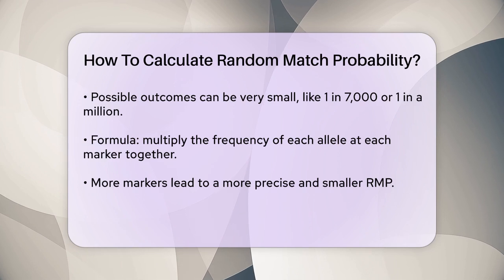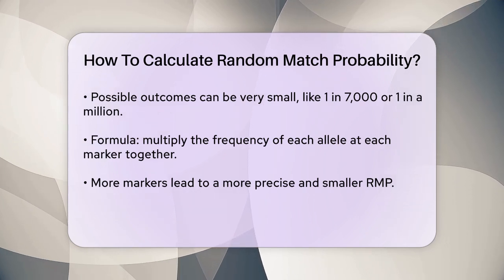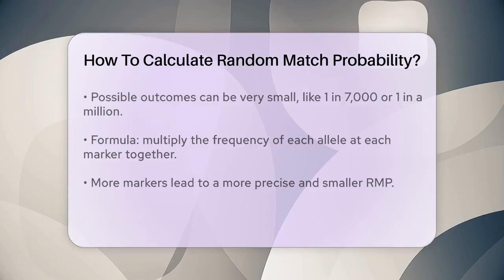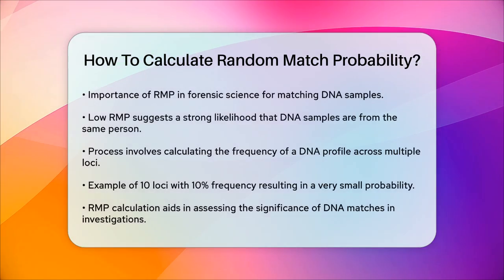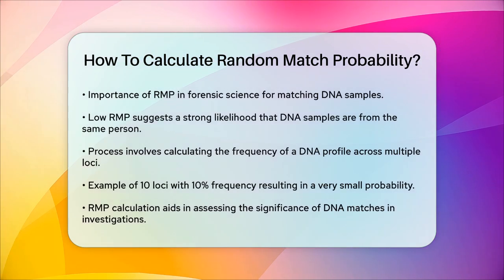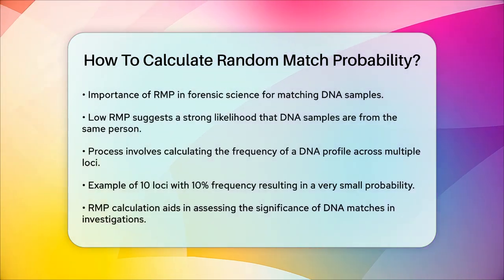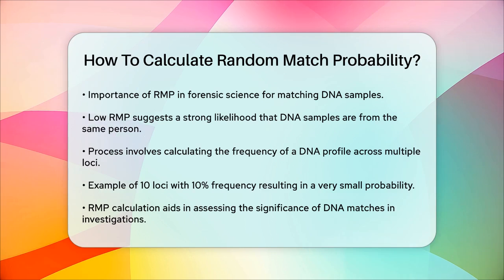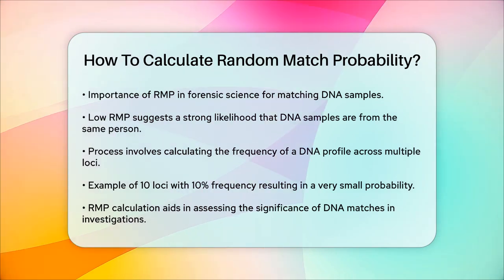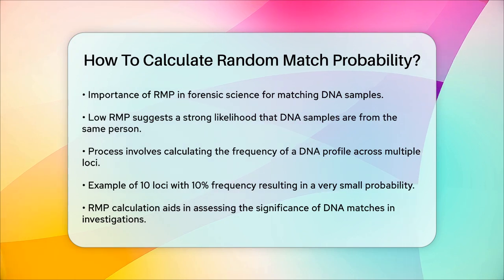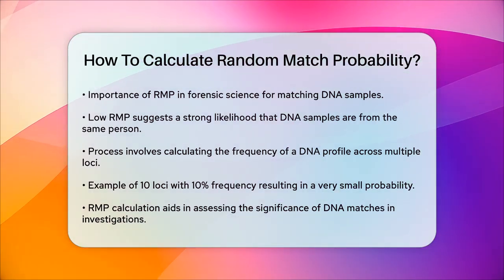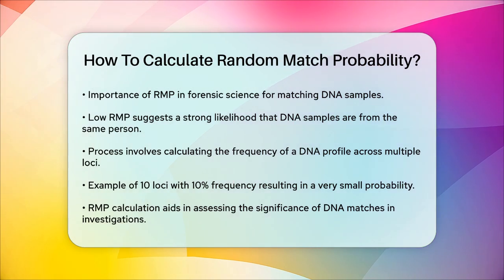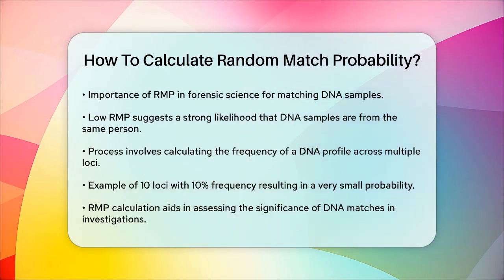To put it into perspective, imagine calculating the frequency of a specific DNA profile in a population. You would look at the frequency of each allele at multiple loci marker locations and multiply these frequencies together. The result gives you the probability that a random person would have that exact DNA profile. For instance, if you have 10 loci and each has a frequency of 0.1, or 10%, multiplying these frequencies together — 0.1 × 0.1 × 0.1 ... for all 10 loci — gives you a very small number, indicating that the DNA profile is quite rare.